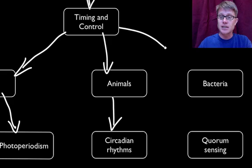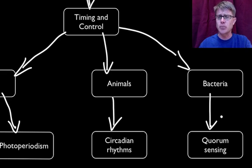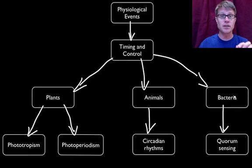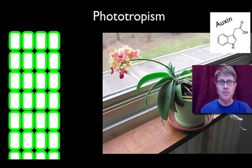Finally I'm going to talk about timing and control in bacteria, and they use something called quorum sensing. A quorum is when you have a group of people together to vote. What we're figuring out is that bacteria can talk — they can communicate between bacteria of the same species and even between species. And that's pretty crazy stuff. So let's get started.